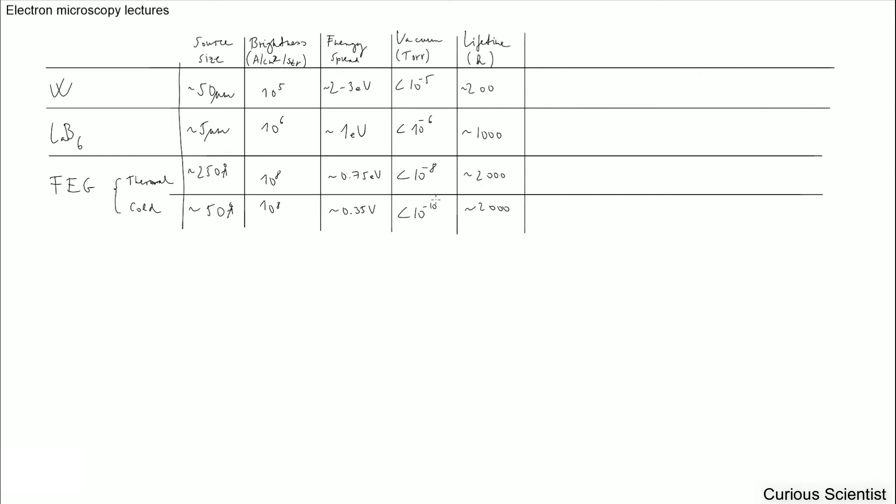We can also talk about lifetime, defined in hours. Tungsten has a very short lifetime — about 200 hours. Lanthanum hexaboride is around 1000 hours. Both field emission guns are much better at around 2000 hours. The vacuum requirements and lifetime correlate with each other. Tungsten does not require a large vacuum but has much lower lifetime. Higher vacuum reduces contamination and extends lifetime. Tungsten and lanthanum hexaboride are not very sensitive, but the cold FEG is very sensitive and the thermal FEG is somewhat sensitive.